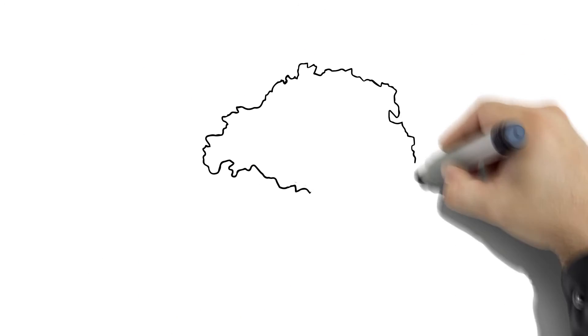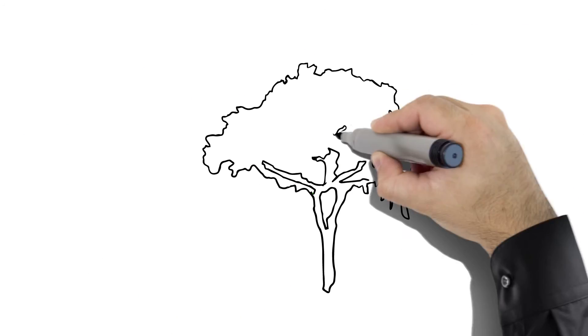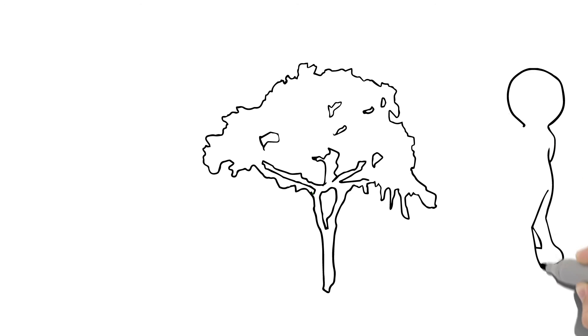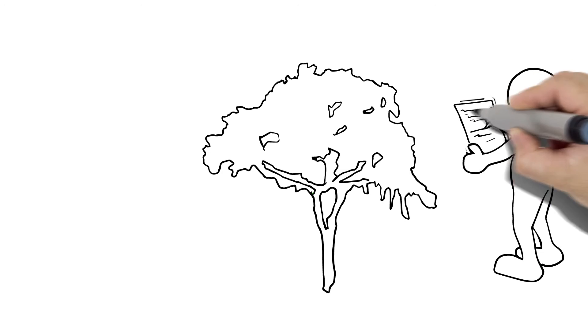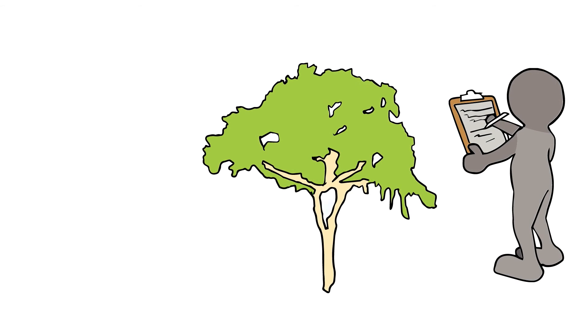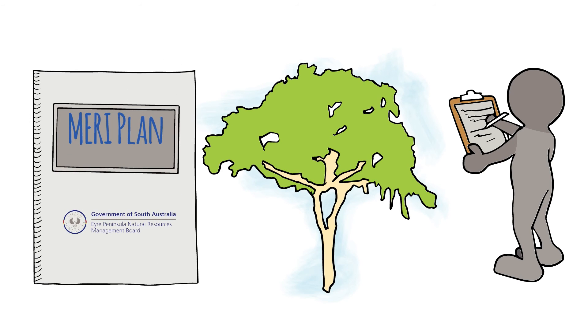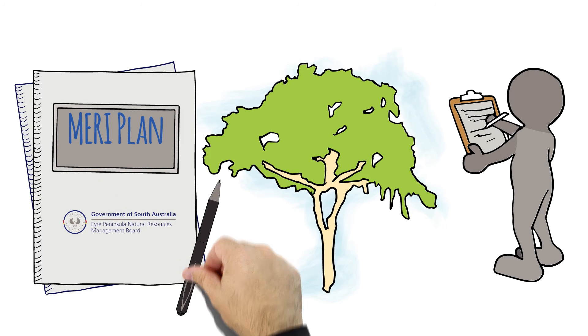The Eyre Peninsula NRM Board have prepared a monitoring, evaluation, reporting and improvement plan, or MERI Plan for short, to accompany the WAP that aims to measure and assess the data that is important for understanding the hydrogeology of the region, environmental assets, and water use.